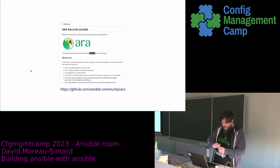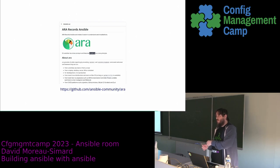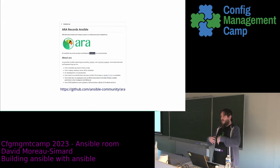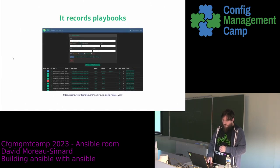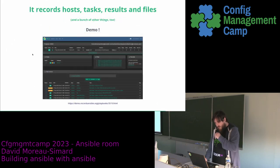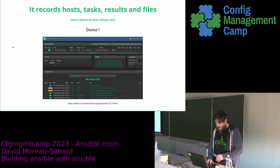Let me tell you about ARA. ARA is another recursive acronym and it features simplicity as a core principle. I like to say that simplicity is a feature — because if simplicity is not a feature, it's easy to implement new features at the expense of simplicity. Things become complex, and if simplicity is not a feature, those trade-offs are made. So, what it does: it records playbooks. It records playbooks but also all sorts of stuff — hosts, tasks, results, files. It allows you to attach things, generic key-value data, and attach it to your playbooks if you want to.